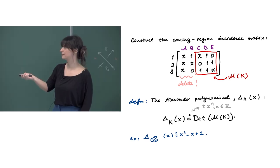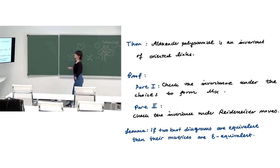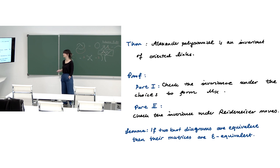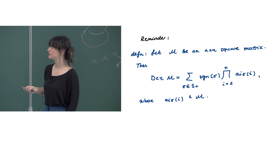I gave you an exercise yesterday — computing the Alexander polynomial of the trefoil — and here is the answer so you can verify. The Alexander polynomial is an invariant of oriented links. To prove this we verify that the definition is invariant under the choices made and under the Reidemeister moves.